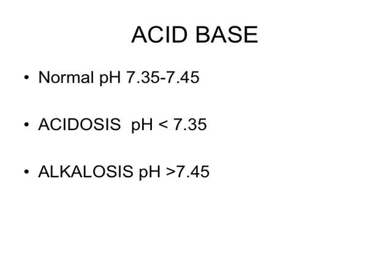A normal pH is 7.35 to 7.45. Acidosis — a condition in which the body has excess acid — is defined as a body pH of less than 7.35. Alkalosis, on the other hand, a condition in which there is not enough acid in the body tissues, is defined as a pH greater than 7.45. I'll expect you to know these terms.